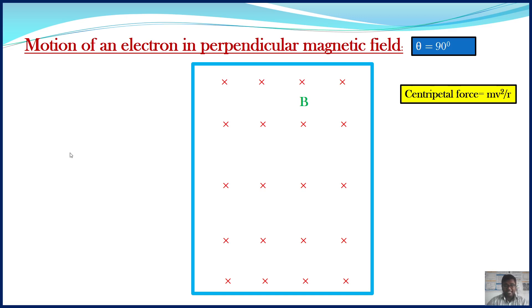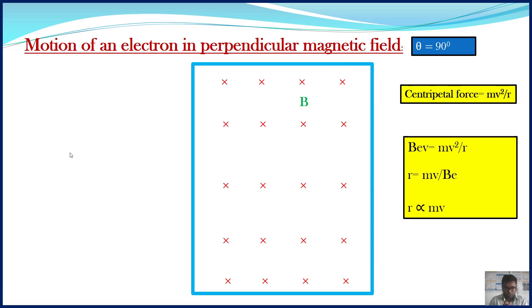In this case, the centripetal force is provided by the magnetic force. So we can write: magnetic force equals centripetal force, that is BeV equals mv²/r, where θ equals 90° so sin90° equals 1. From this, we can calculate the radius: r equals mv divided by eB. The radius is proportional to m times v, and m times v is the momentum. So the radius is directly proportional to the momentum — if the momentum of a particle changes, the radius of the circle will also change.